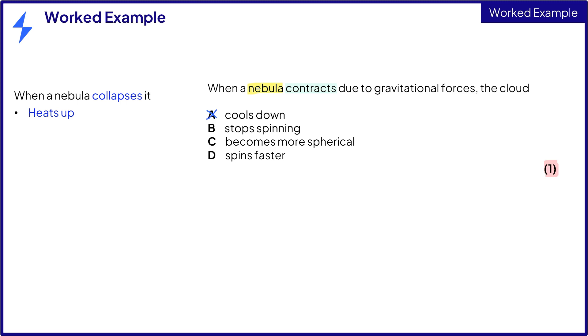We know from the name accretion disk that it flattens into a disk. Therefore, it would not become more spherical.